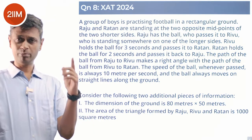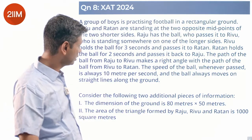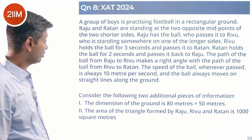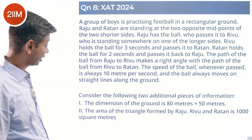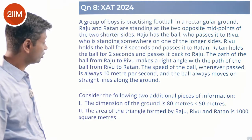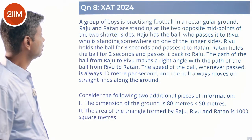Key terms: rectangle, midpoint, on the longer side. Rivu holds the ball for three seconds and passes it to Ratan. Ratan holds the ball for two seconds and passes it back to Raju.